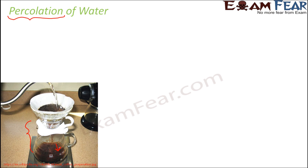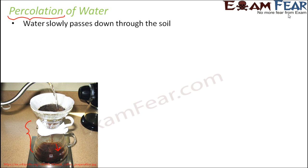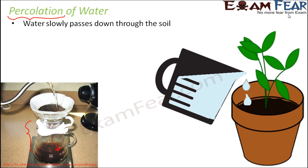Now we are going to talk about percolation of water through soil, considering soil as the filter. Soil has a lot of pores — the A horizon is very soft and porous. When you water plants in a pot, you can see water on the surface initially, but after a couple of minutes all the water goes inside.